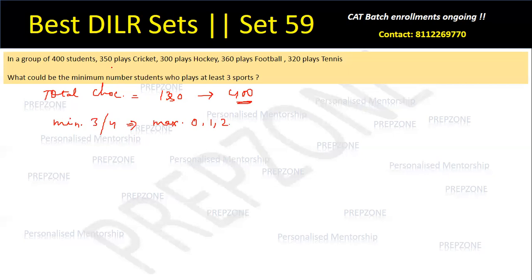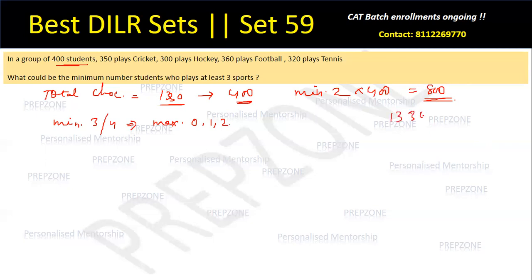This is a classic problem, similar to set number 58 part B from before. We have 400 students. Let's give two chocolates to all 400 students — that consumes 800 chocolates. But we have 1330 chocolates in total, so the leftover chocolates that need to be distributed is 530.